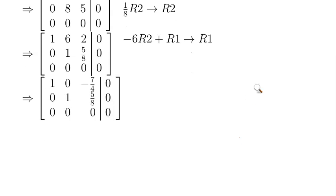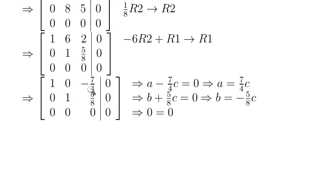Now the matrix is reduced. To find the kernel, I'll write the corresponding equations. The first row gives A minus 7/4 C equals 0, which means A equals 7/4 C. The second row gives B plus 5/8 C equals 0, so B equals negative 5/8 C. The third row says 0 equals 0, which gives no condition. This means C is a free variable — once you pick C, the values of A and B are determined.